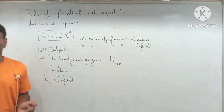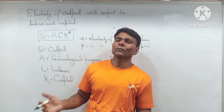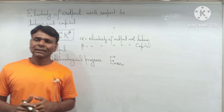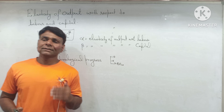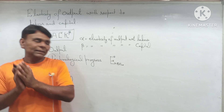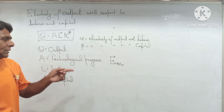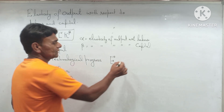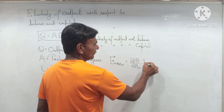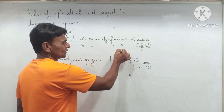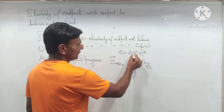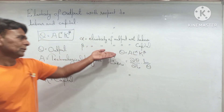Elasticity of output with respect to labor is denoted by E_L. Elasticity of output with respect to labor means percentage change in quantity of output in response to percentage change in amount of labor. The formula is: partial derivative of the production function with respect to labor, multiplied by L over Q. The production function is given as Q equals A times L to the power alpha times K to the power beta, and we are going to take the partial derivative of Q with respect to L.